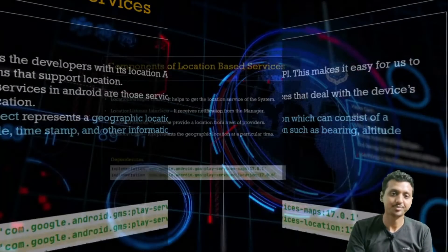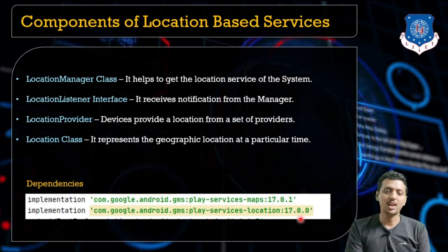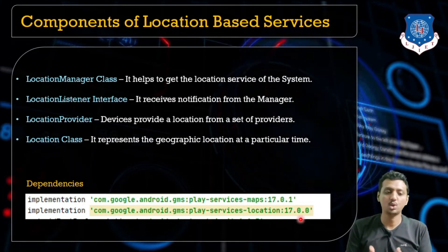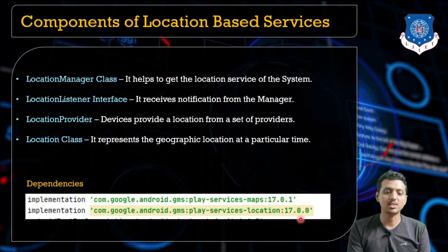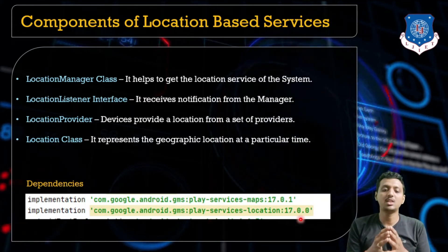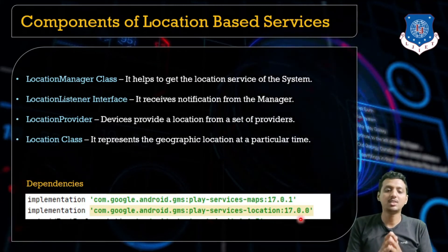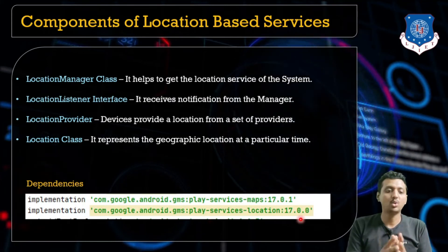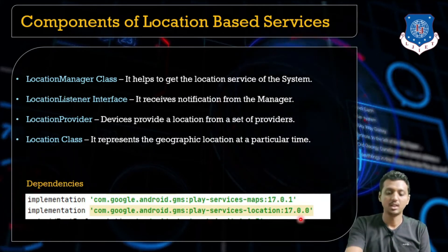Now, the components of location-based services. There are four different classes: LocationManager, LocationListener, LocationProvider, and the Location class. The LocationManager helps us get the location services of the system. The LocationListener interface receives notifications from the manager. The LocationProvider provides the location from a set of providers. And the Location class represents the geographic location at a particular time.